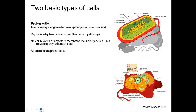Just a quick review here first. Our prokaryotic cells that we talked about in the last two podcasts are almost always single-celled, unless it's a colony of them living together. They reproduce by binary fission. They don't have a nucleus or any other membrane-bound organelles. The DNA just kind of floats around the cell, and all bacteria are prokaryotes. You may want to list some of these characteristics in your notebook.